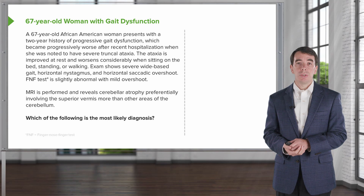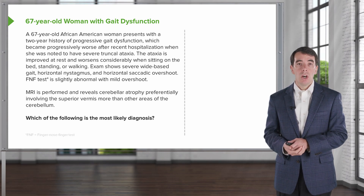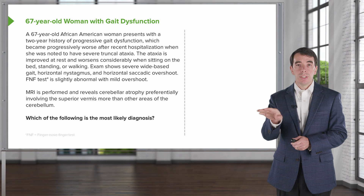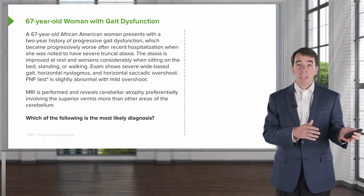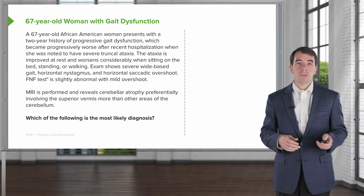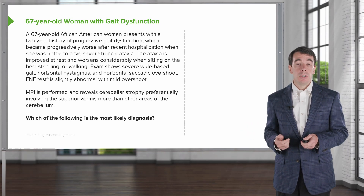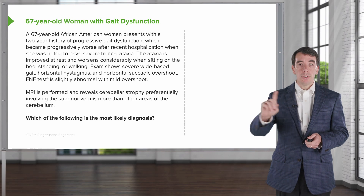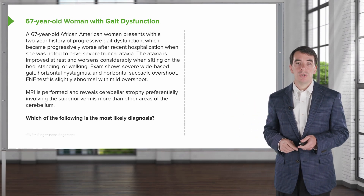Her exam shows a severe, wide-base gait, which we see with cerebellar problems, horizontal nystagmus, and saccadic overshoot, where the eyes are not coordinated when you look in one direction or the other. Finger-to-nose-to-finger test is slightly abnormal with mild overshoot, and again we are seeing problems with coordination.